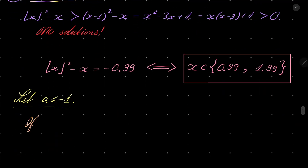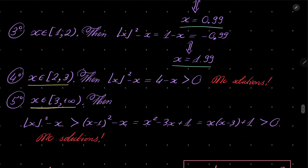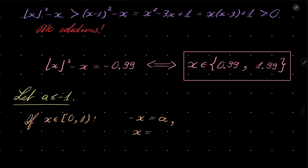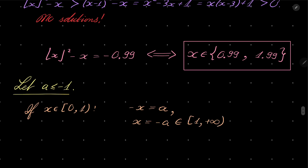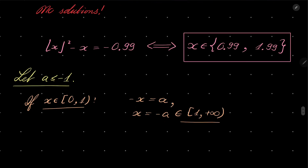If x is between 0 and 1, then floor of x is 0, so minus x equals a, meaning x equals minus a. Since a is between minus infinity and minus 1, this number is between 1 and infinity. But x must be between 0 and 1, so it cannot be from 1 to infinity — no solutions.